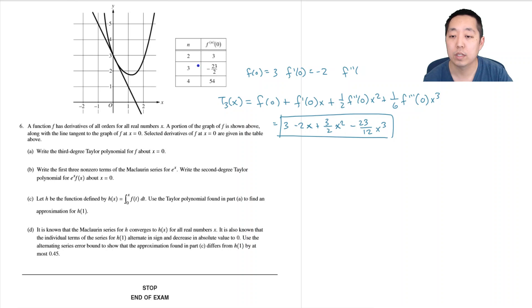Part B: Write the first three non-zero terms of the Maclaurin series for e^x. e^x is equal to 1 plus x plus one half x squared, those are the first three non-zero terms.